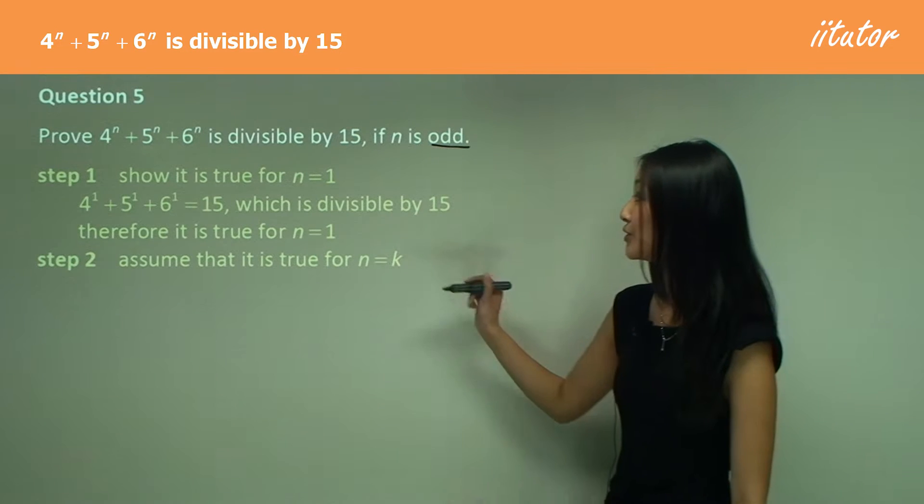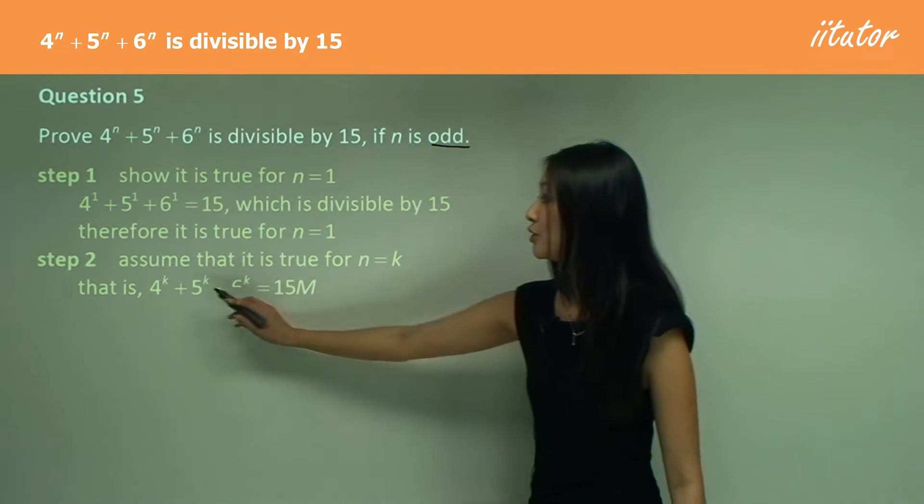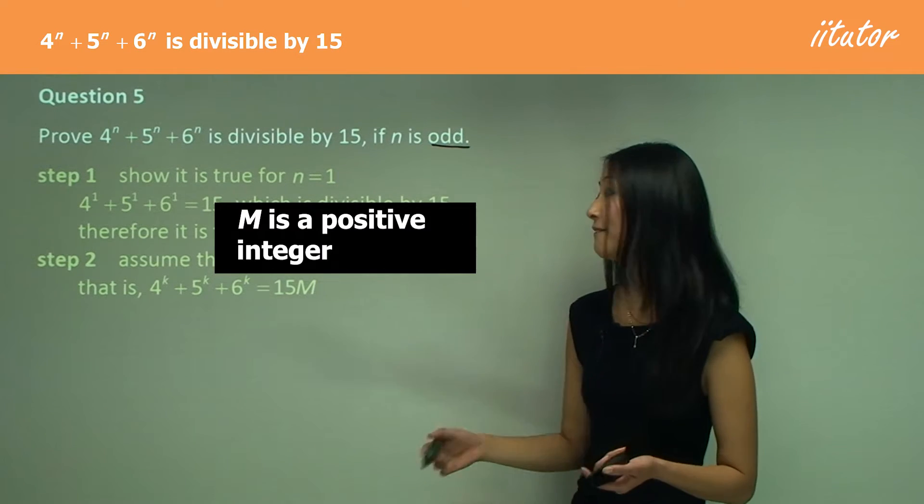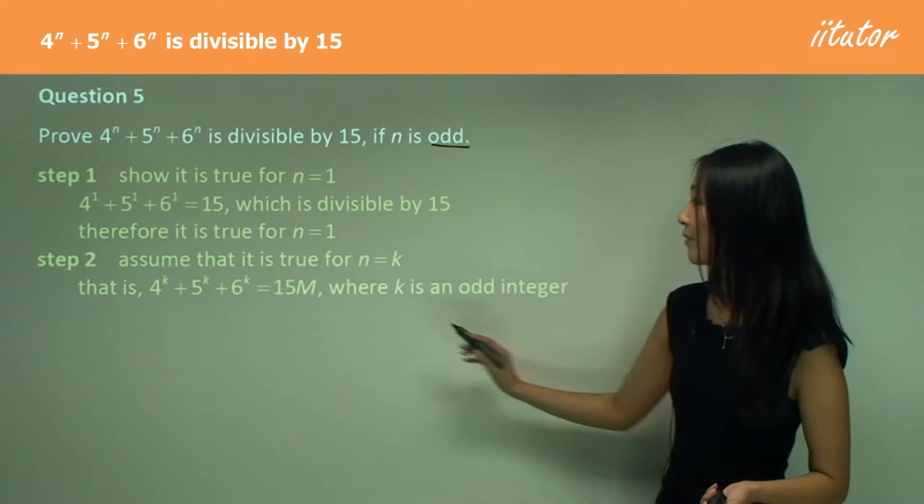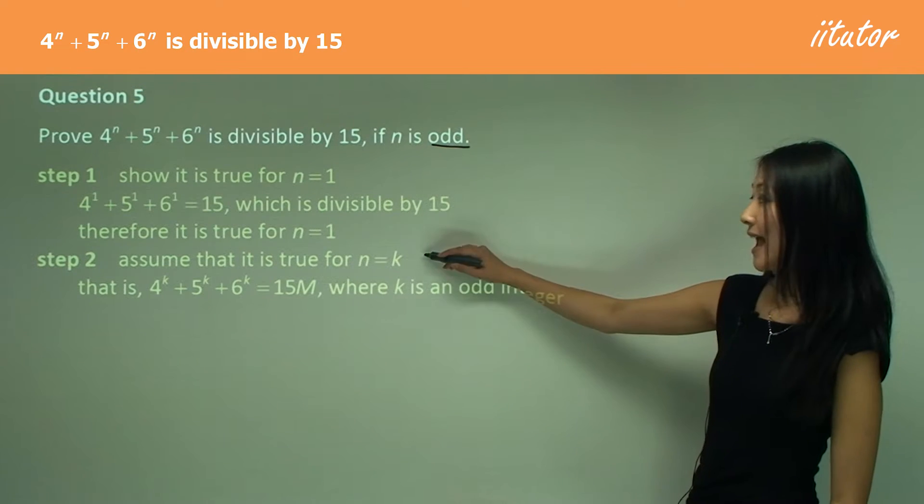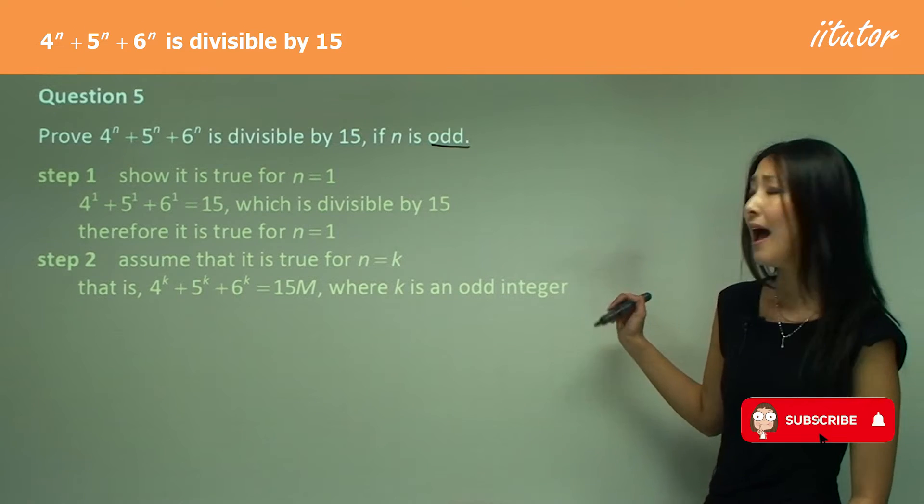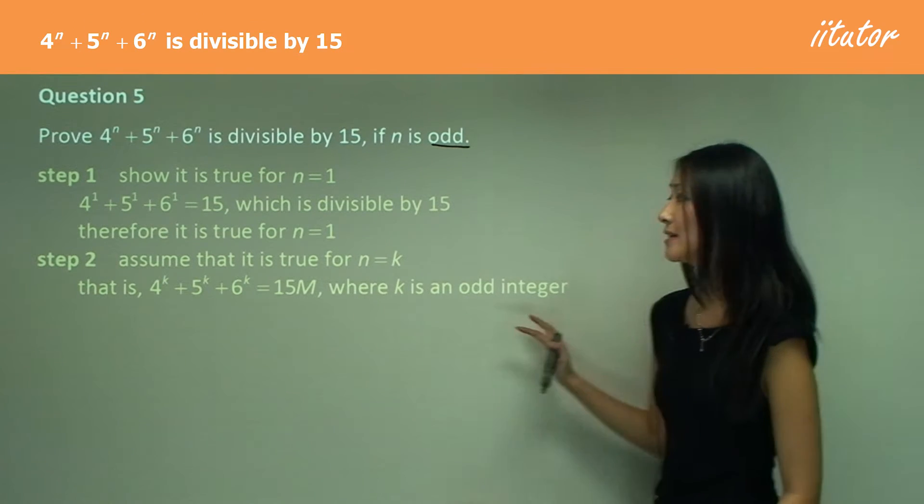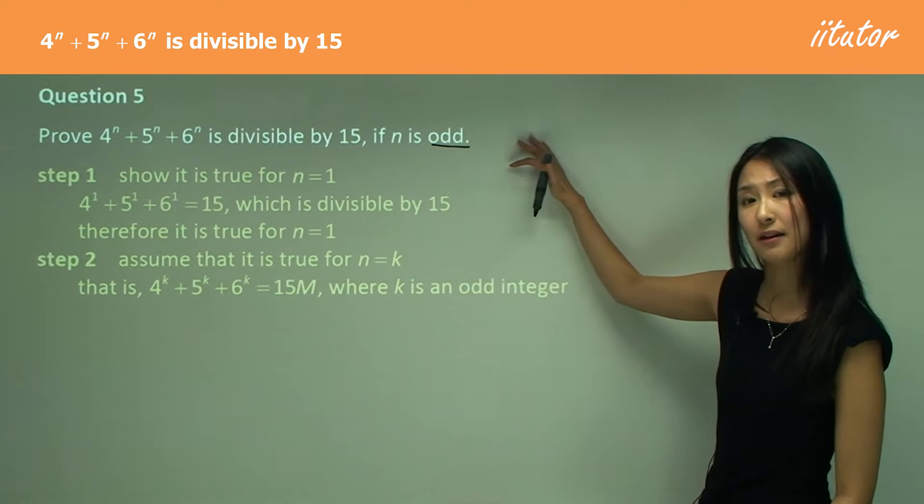In step two, we assume that this is true for n equals k. So we substitute in k and make it equal to 15m, because it's divisible by 15. We have to add where k is an odd integer, because if n is odd and n equals k, therefore k must be odd as well. It's important that we specify this in our proof because otherwise it throws off this assumption.